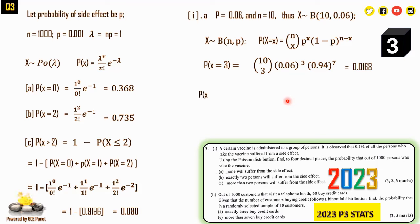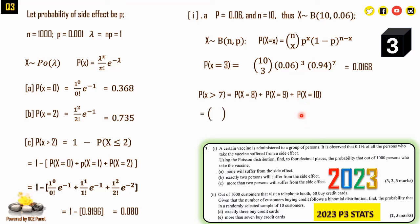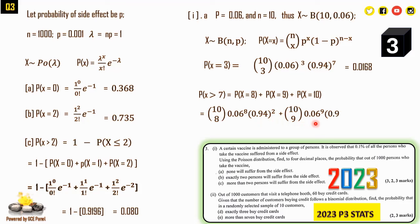For more than 7 buying credit cards: P(X > 7) = P(X=8) + P(X=9) + P(X=10) = C(10,8)(0.06)^8(0.94)^2 + C(10,9)(0.06)^9(0.94)^1 + C(10,10)(0.06)^10. When simplified, this value is approximately zero.